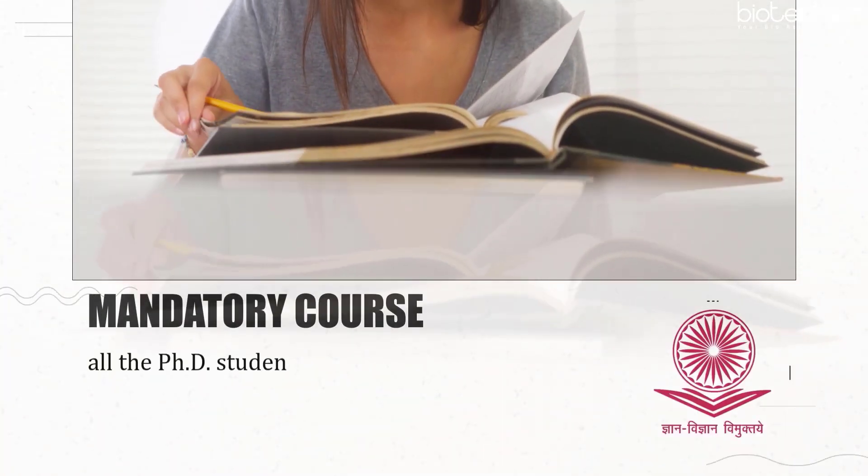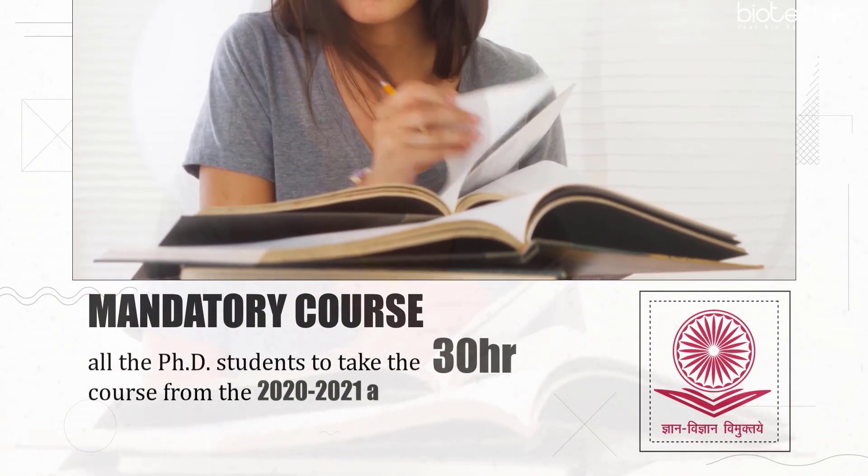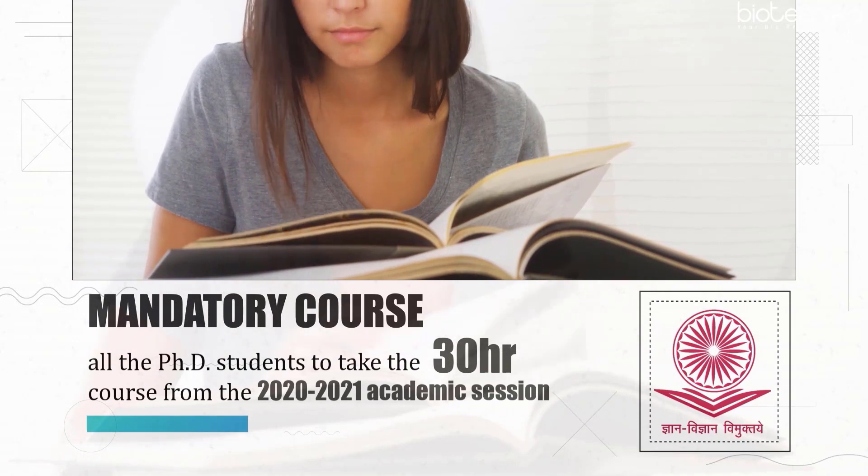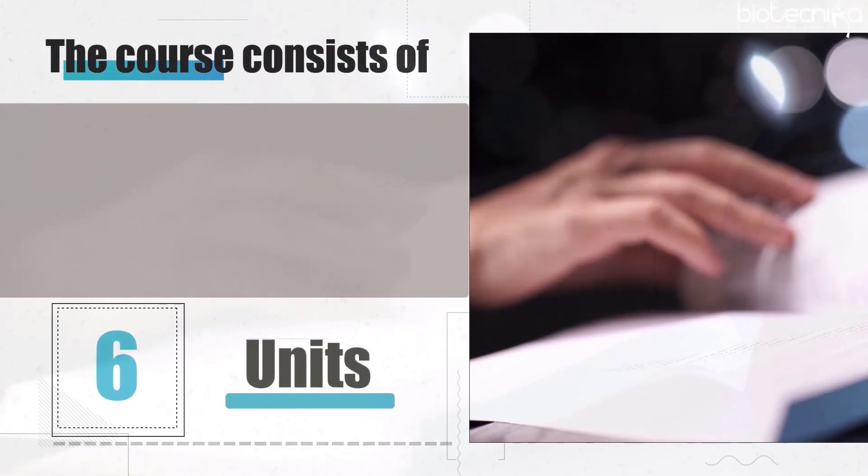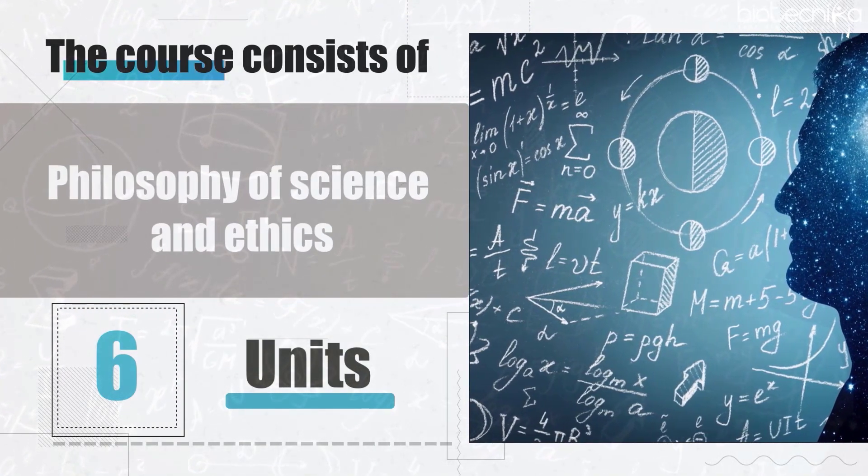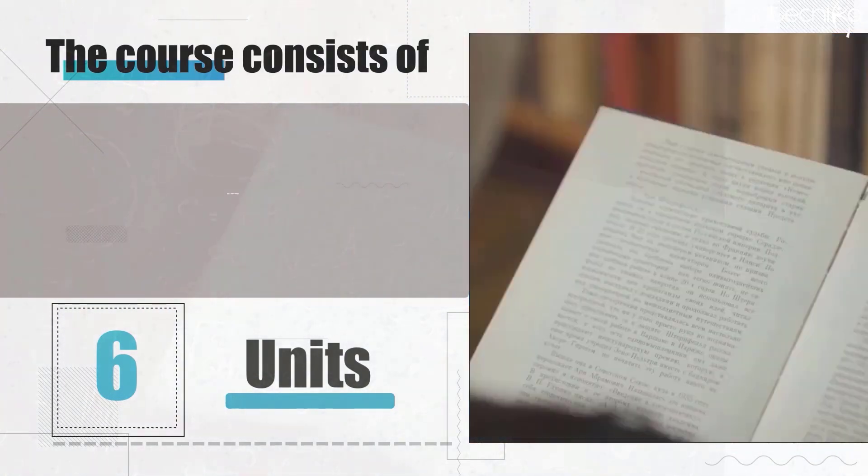It is now mandatory for all PhD students to take the 30-hour course from the 2020 to 2021 academic session. The course consists of six units, each focusing on the basics of philosophy of science, science and ethics, publication ethics, research integrity, and hands-on sessions to identify predatory publications and research misconducts.